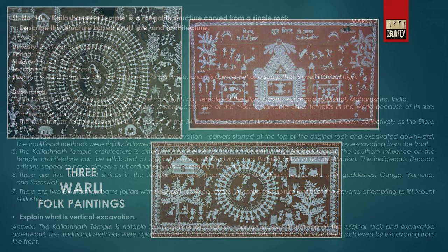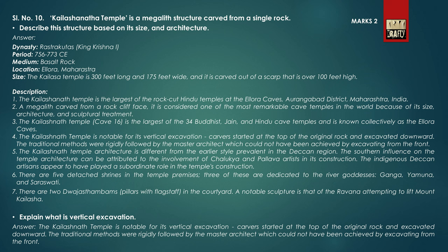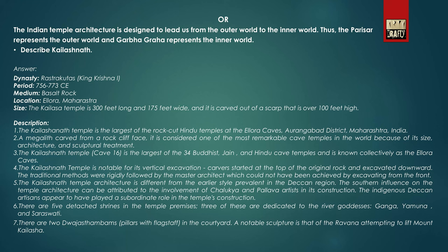In question number 10 of Section B, you have to write about the Kailasanath Temple in detail and explain what is vertical excavation. There is an alternate question: the Indian temple architecture is designed to lead us from the outer world to the inner world. Thus the Parishar represents the outer world and the Garbha-griha represents the inner world. Here you have to describe the Kailasanath Temple of Ellora.